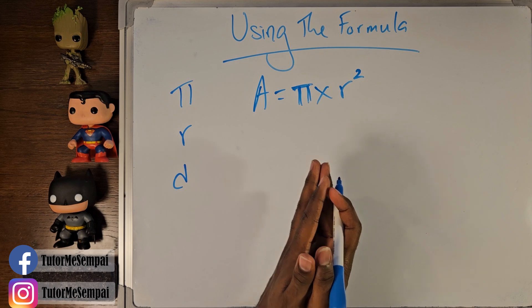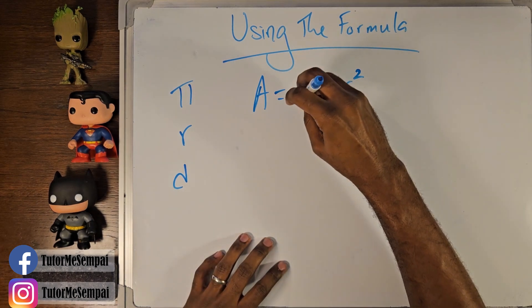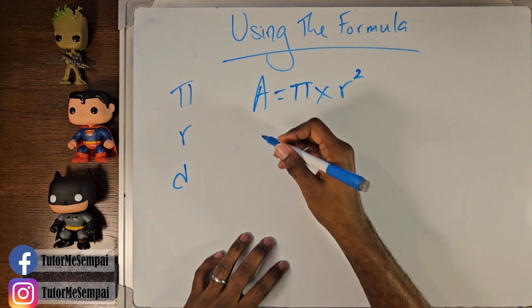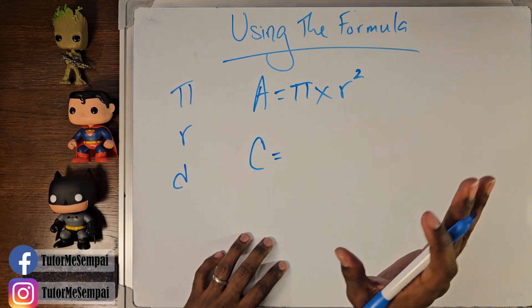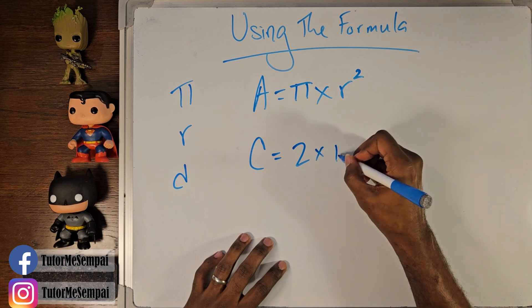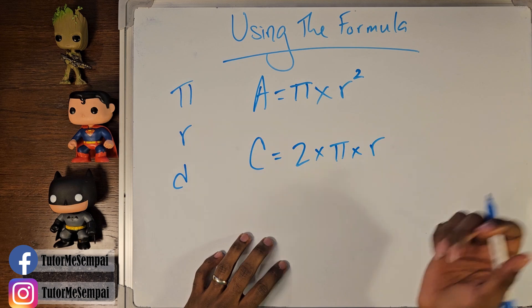Now, this is not to be confused with the formula for your circumference. So let's clean this up a little bit. The formula for your circumference, I'm going to call it C, looks pretty similar. It's two times pi times r for your radius.